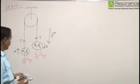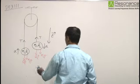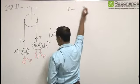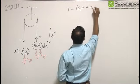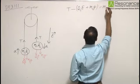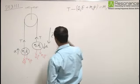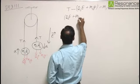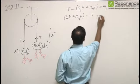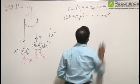Now from the force equations, we can write T minus Q1E plus M1g is equal to M1A, and Q2E plus M2g minus T is equal to M2A.